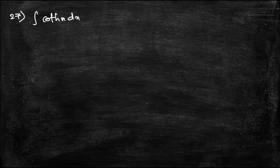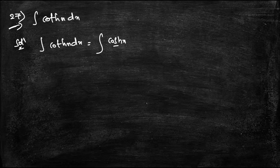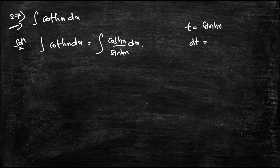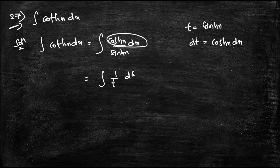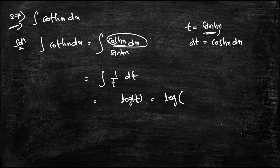Question 27: The given integral is ∫coth x dx. I write this as ∫cosh x / sinh x dx. Taking t = sinh x, dt = cosh x dx. The integral becomes ∫(1/t) dt = log t = log(sinh x) + C.